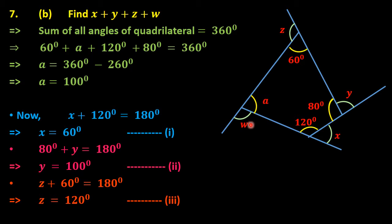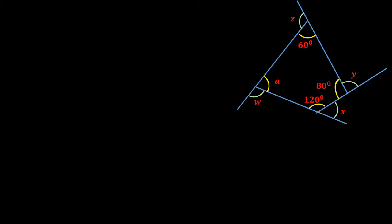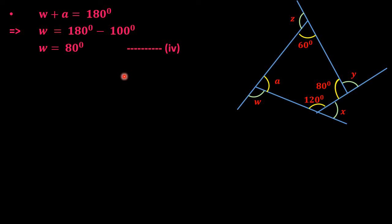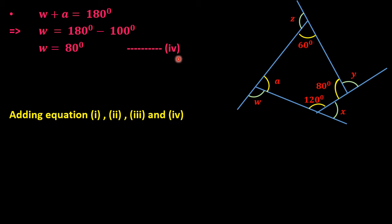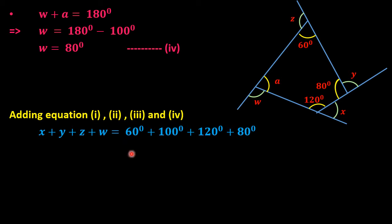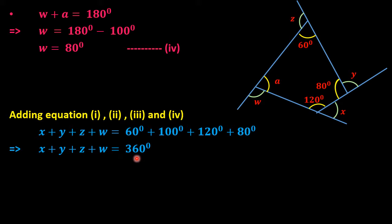Finally, w and a are also a linear pair. Since a equals 100 degrees, w equals 180 minus 100, which is 80 degrees — equation four. Adding all four equations: x plus y plus z plus w equals 60 plus 100 plus 120 plus 80, which gives 360 degrees. This is the answer for question 7b.